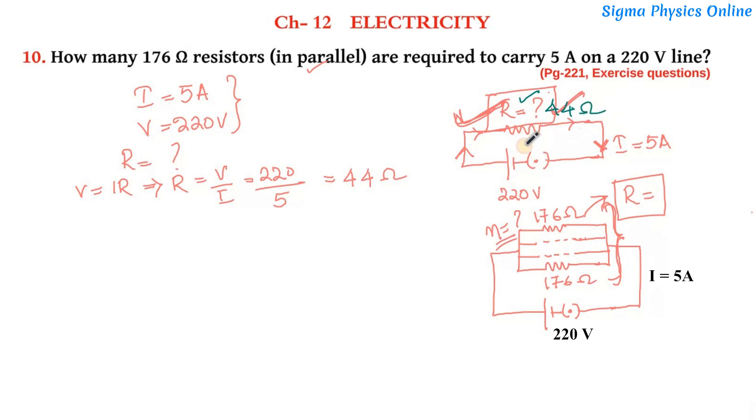Now this 44 ohms is the overall resistance produced by a certain number of equivalent resistors which are connected in parallel. So we have to find out how many of them are connected. Since it's given that they are connected in parallel, we have to apply the formula for equivalent resistance in parallel: 1 by Rp equals 1 by R1 plus 1 by R2 and so on, n times.